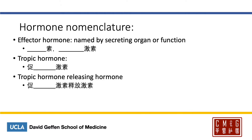We're going to talk about some hormones next. Just as there is some nomenclature in English regarding how hormones are named, there's some in Chinese as well. The effector hormones are named by the secreting organ or their function — something 素 or something 激素. Whereas the tropic hormones will be 促something激素, 促 meaning to stimulate. And the tropic hormone releasing hormone will be 促激素释放激素, where 释放激素 means releasing hormone.